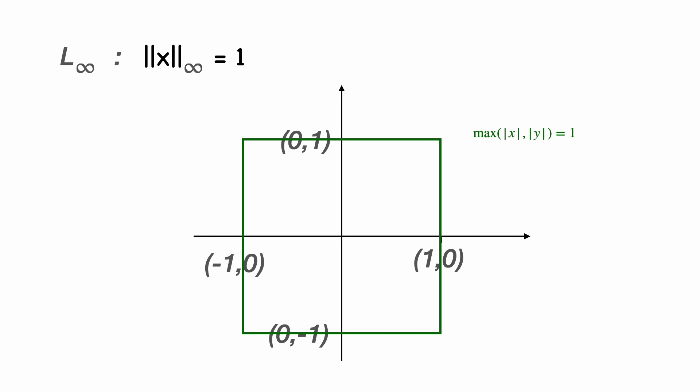This is why it makes sense to define the L infinity norm as we did as the maximum value among the components of our vector. Any vector in this set has either an x component or a y component or both at the corners with an absolute value of 1, and so all we need to define the L infinity norm is to take the length of the maximum component.